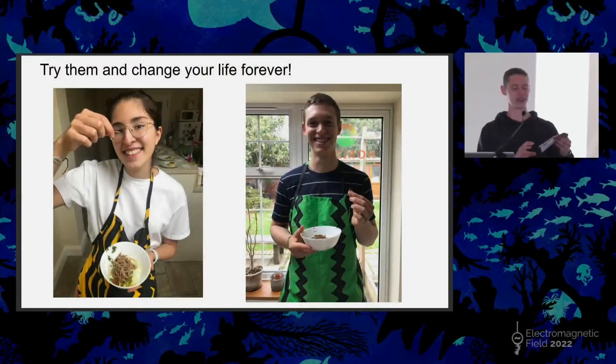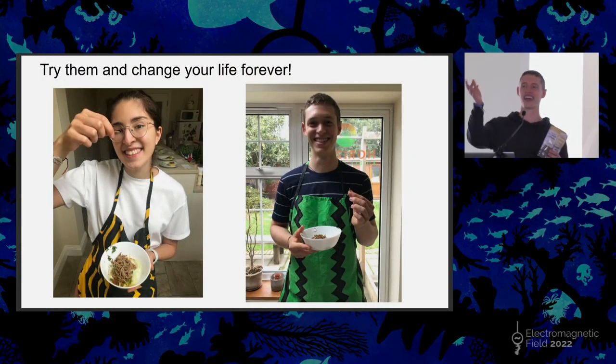My personal favorite recipe: pan fry them, put some spices and barbecue sauce, and top them on your cheesy nachos. In this picture these are crickets, but you can do the same thing with mealworms. They're crunchy and they're great. I've brought a few dried crickets for you to try — I'll be at the exit in case you want to try them. Thank you.